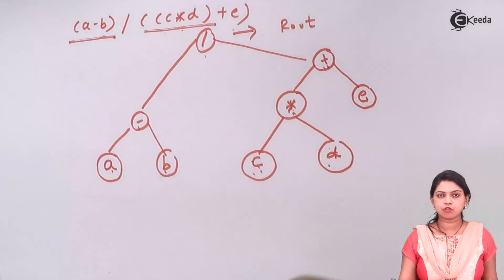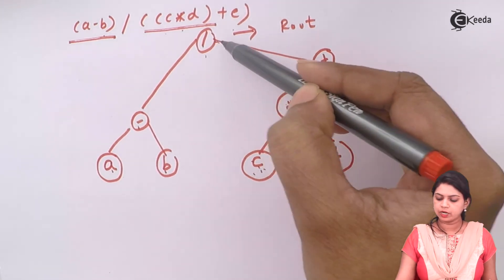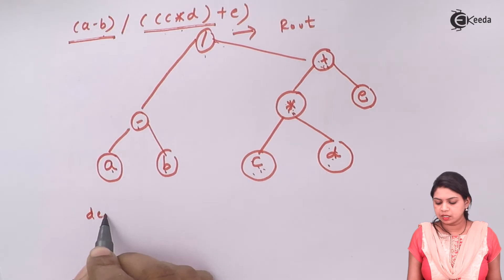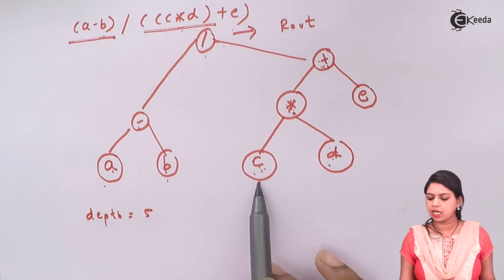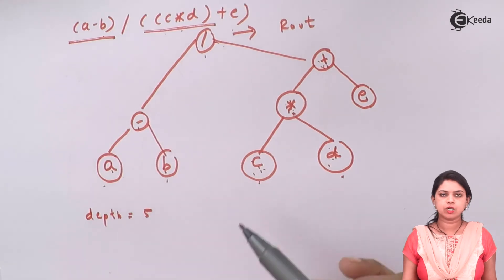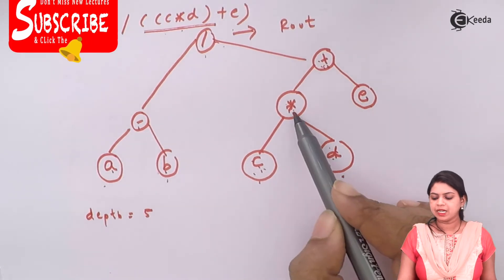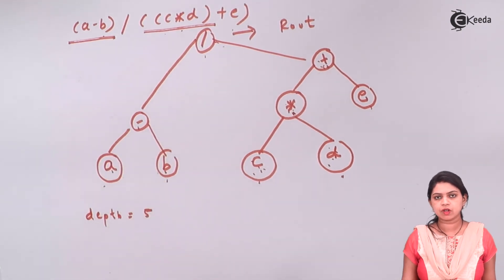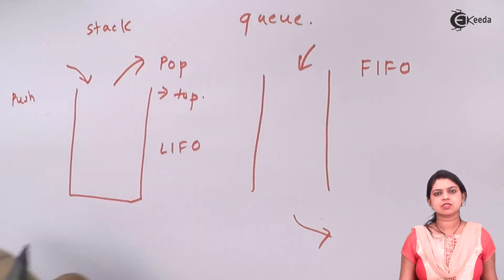The depth of this expression binary tree is four, because the longest path contains a maximum of four nodes. A, B, C, D, and E can be called leaf nodes or terminal nodes since they have no successors. The multiplication sign and E are called siblings because they are children of the same parent. This concludes the concept of binary tree.